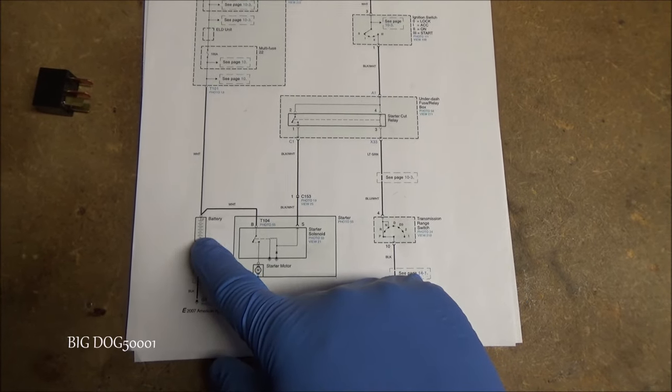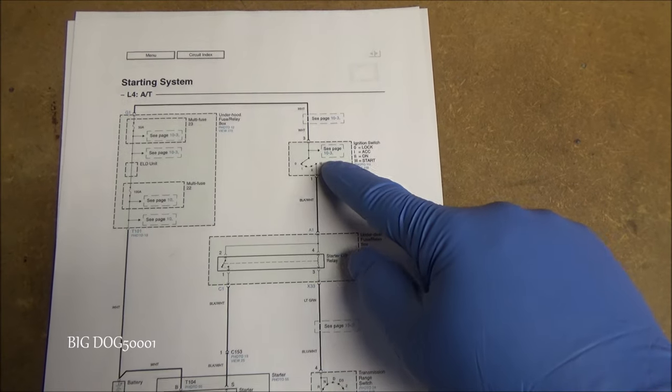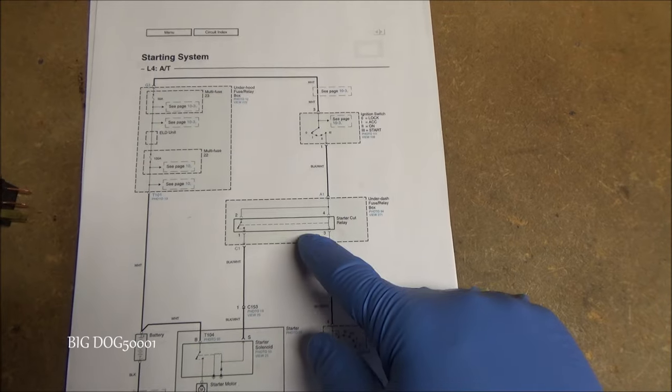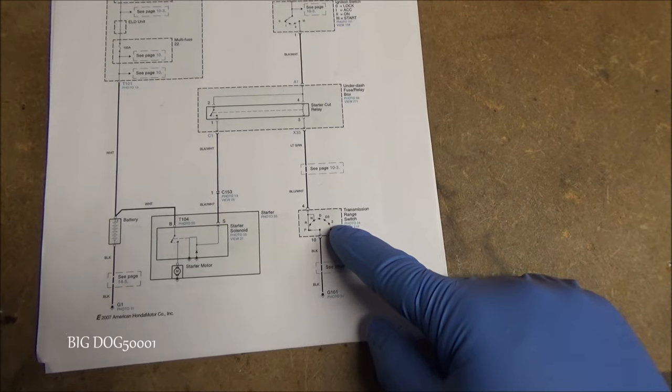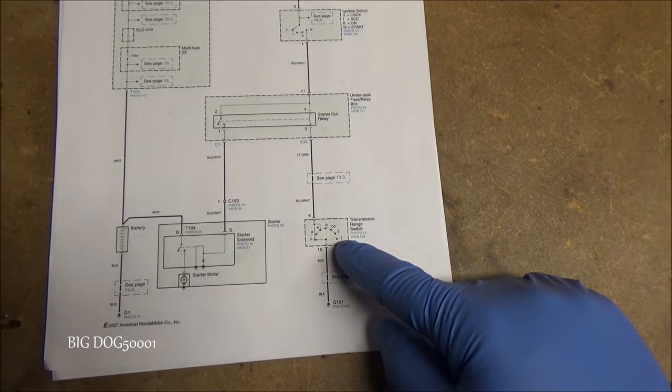Let's look at our components as they're laid out on this wiring diagram. We have our battery listed here, we have our starter listed here, our ignition switch where we turn the key is listed here, our starter cut relay is shown right here, and it's located in the underdash fuse box.